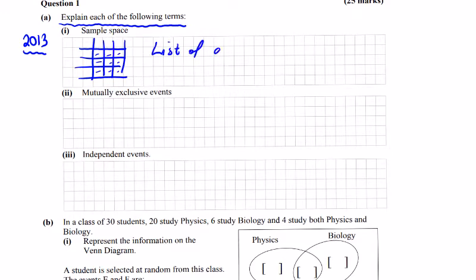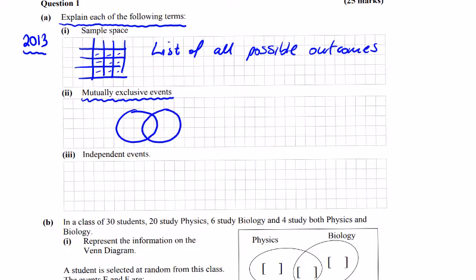So our sample space is the list in the middle there of all possible outcomes. That's the best way to describe it. Mutually exclusive events - well, that kind of explains itself. Mutually exclusive means they have nothing in common, so there's a null set in the middle. This is A and this is B; they have nothing in common.